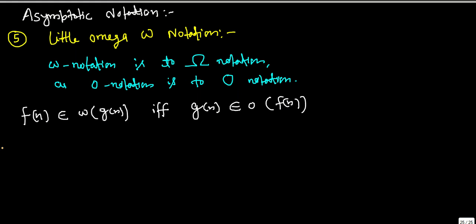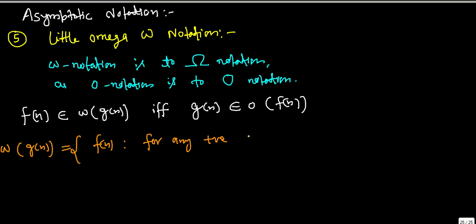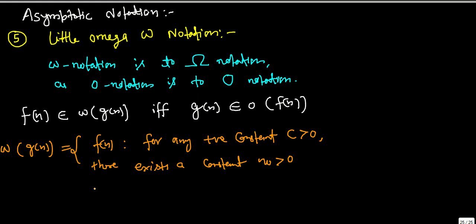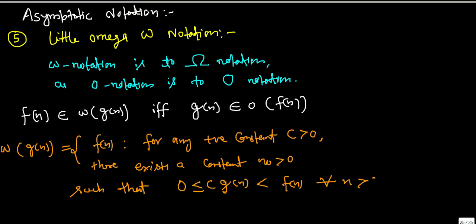More formally, little-omega of g(n) is defined as the set of all f(n) such that for any positive constant c > 0, there exists a constant n₀ > 0 such that c·g(n) is always greater than or equal to zero and less than f(n) for all values of n greater than or equal to n₀.